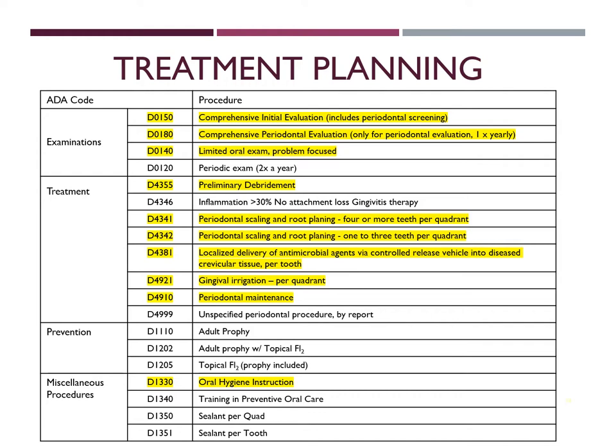Treatment planning. We are going to perform multiple examinations just because of the patient's condition. If it is a new patient, we are going to perform a comprehensive initial evaluation which includes a periodontal screening. From there, we can choose from a comprehensive periodontal evaluation, which is once a year, or a limited oral exam. For treatment, we are going to start off with a preliminary debridement to remove all the calculus that is supragigivally. From there, we will move on to SRP and then deliver antimicrobial agents such as Arrestin or Cario Chip. We are also going to do a gingival irrigation with Peridex. And then from there, we are going to perform periodontal maintenance on the patient as a 3-month recall.